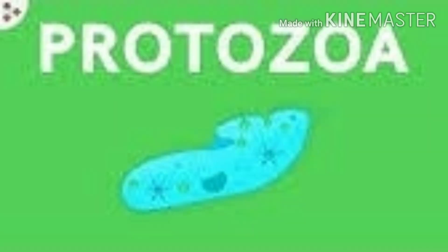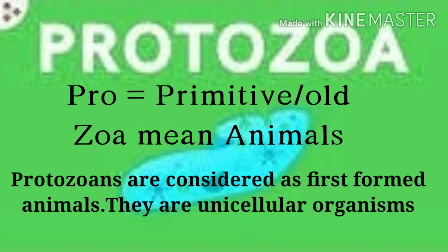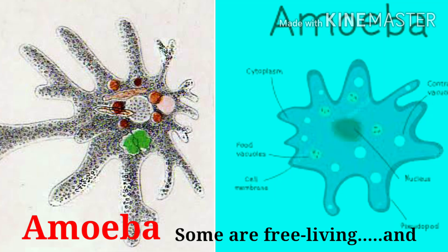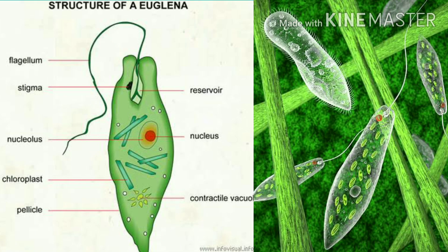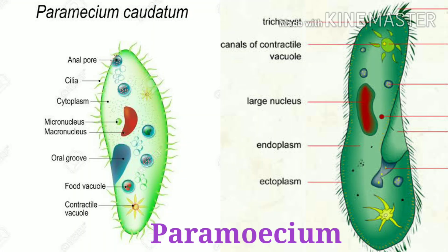Protozoans means very primitive form of organisms. Pro means primitive and zoa means animals. Protozoans are unicellular free-living or parasitic organisms. Amoeba, Paramecium, and Euglena are examples.